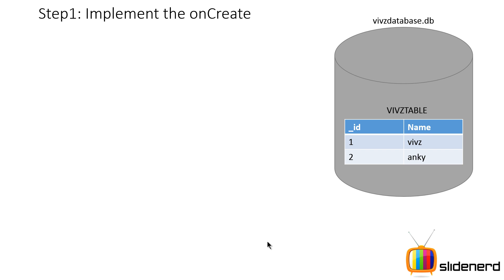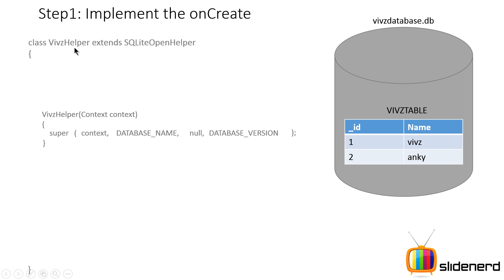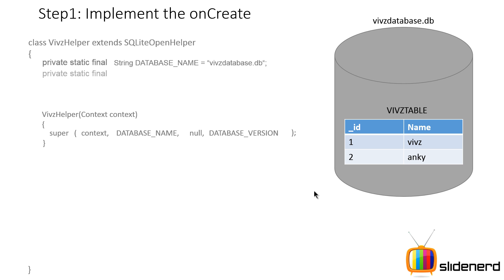So, we extended SQLiteOpenHelper and called that class VIVSHelper. In your main activity, where you want to use this, you create an object of VIVSHelper and then call the method getWritableDatabase on that VIVSHelper object. That gives you an object of SQLiteDatabase, which represents your database, and you use that object to perform the different queries, which we'll cover in upcoming videos.